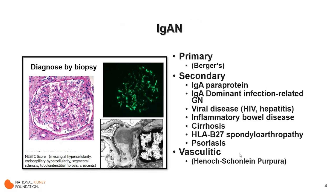IgA nephropathy comes in three flavors. It's diagnosed by kidney biopsy, and what you can see is a glomerulus with mesangial expansion and hypercellularity, and on immunofluorescence microscopy, the main immunoglobulin deposited is IgA. You can see immune complexes on electron microscopy in the mesangium. We're going to be talking about primary IgA nephropathy. There are secondary forms associated with paraproteins, infections, viral diseases like HIV or hepatitis, inflammatory bowel disease, cirrhosis, HLA-B27 spondyloarthropathies, and psoriasis — we won't be discussing those secondary causes.